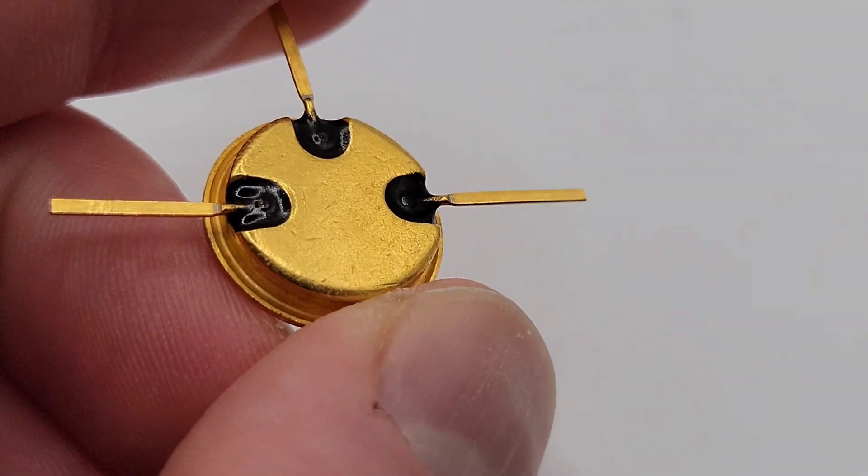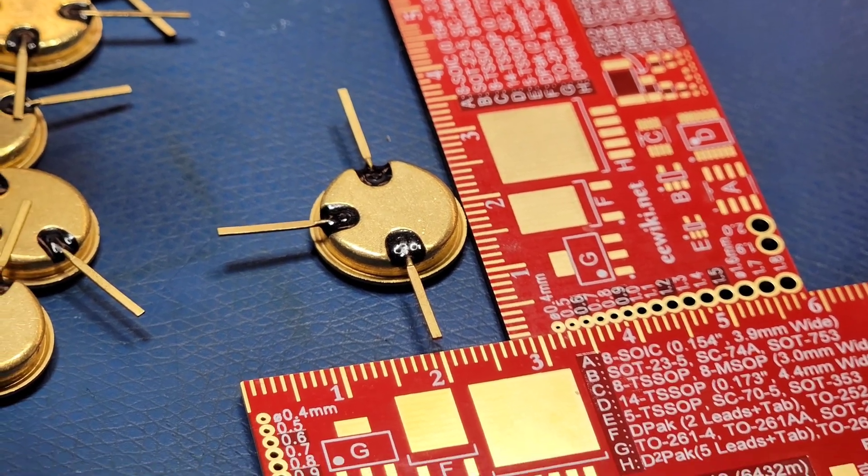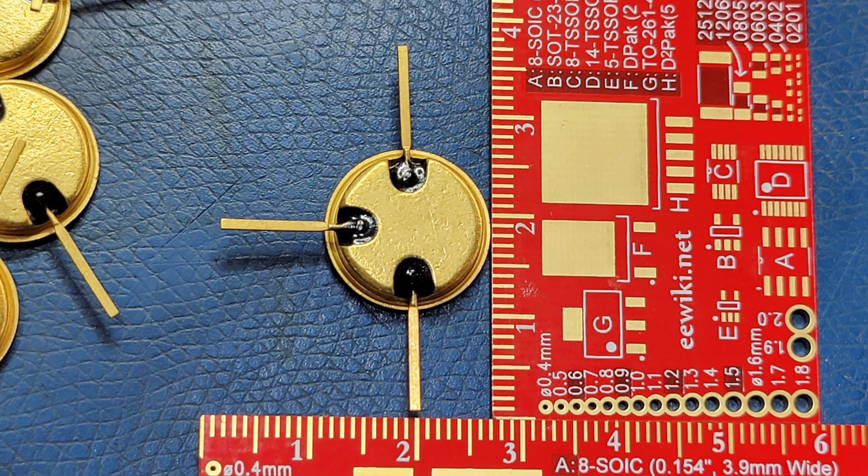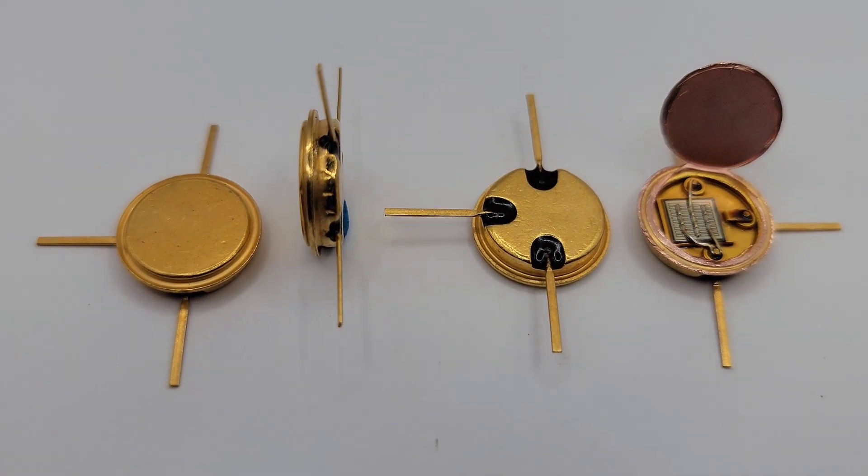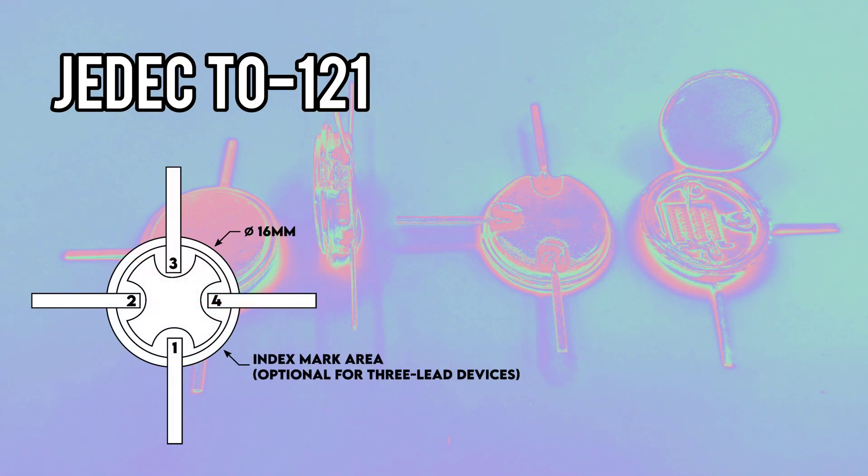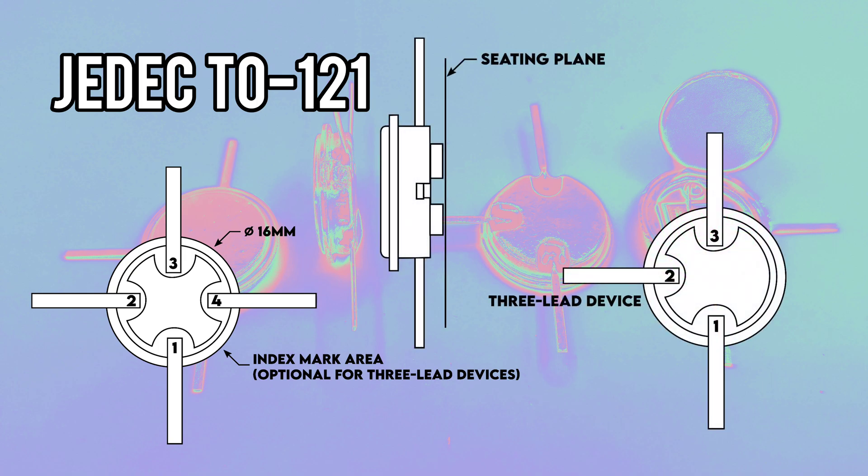To determine what this package was, I had to dig through all of the transistor outline specifications listed on the JEDEC website. Eventually I made it to the TO-121, which is a perfect match. According to the document on JEDEC's website, this transistor outline dates all the way back to 1967.